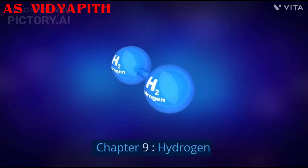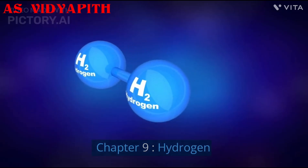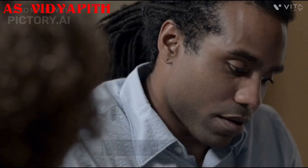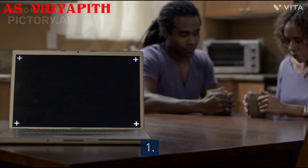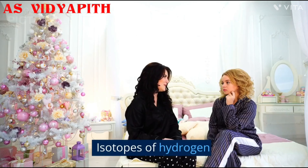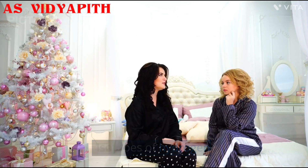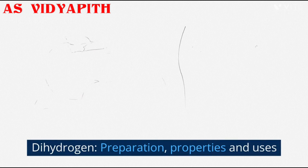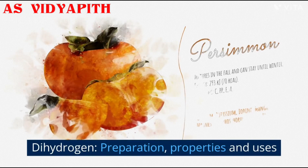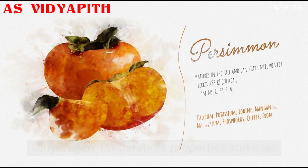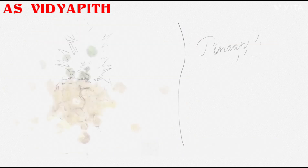6. Electrochemical Series. Chapter 9: Hydrogen. Important Topics: 1. Isotopes of Hydrogen. 2. Dihydrogen — Preparation, Properties and Uses.